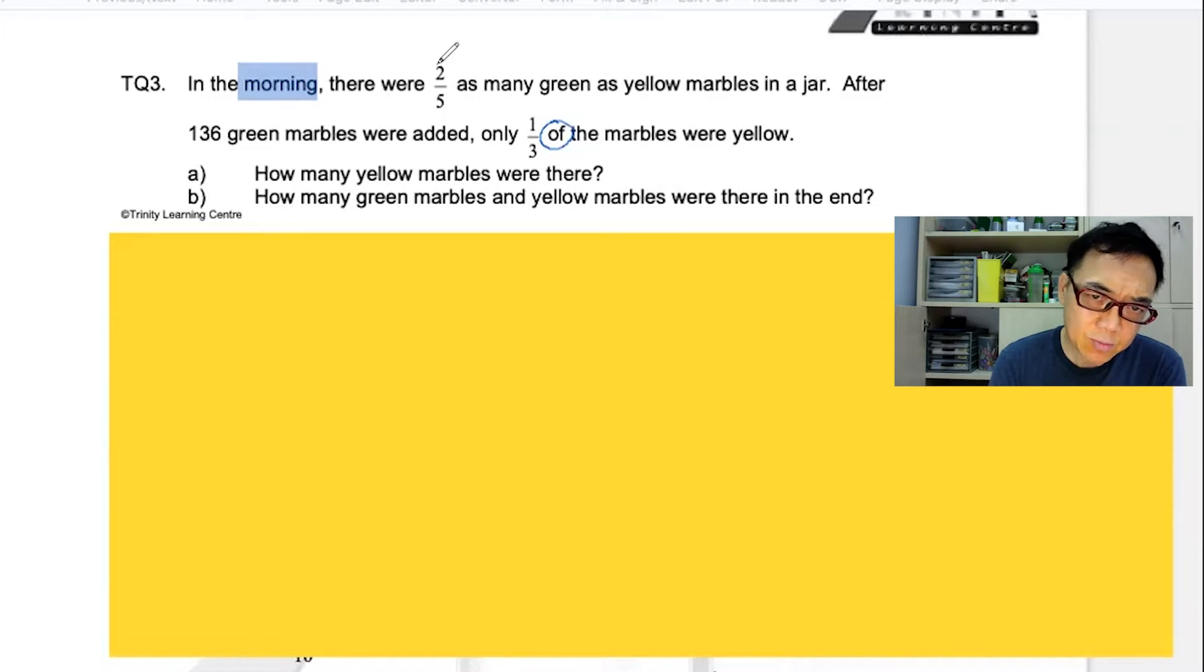The first one says that there were two-fifths as many green as yellow. That makes your green two. And then makes the yellow five.